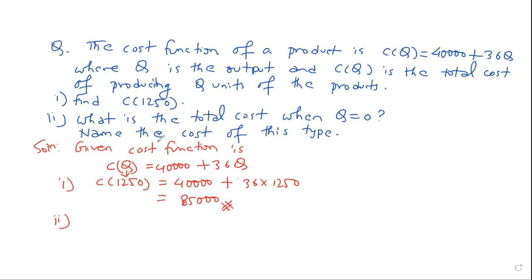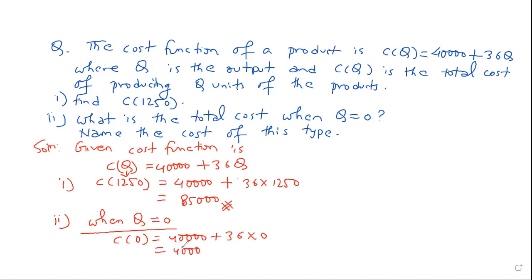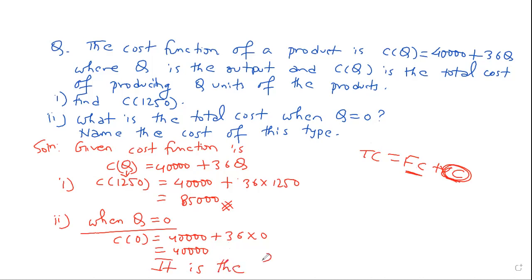For the second part, what is the total cost when Q is equal to zero? C(0) = 40,000 + 36 × 0 = 40,000. When the quantity produced is zero, total cost equals fixed cost plus variable cost, but variable cost is zero. So the cost of 40,000 is the fixed cost. It is the fixed cost.